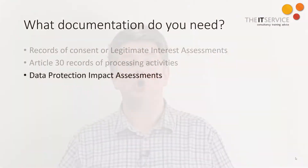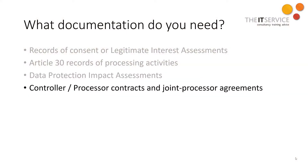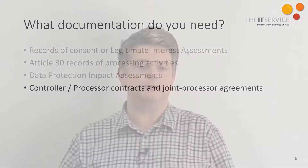What else do you have to do? We've talked about you being a controller, where you make decisions about the data, or a processor, where you're doing the processing on behalf of someone else. If you're the controller and you decide to use a processor to help with the processing, you have to have a written contract in place with each processor that you use. There are specific requirements as to what should go into that contract, listed in Article 28 of the GDPR, which goes through the obligations of processors. You'll also want to talk to your legal advisors to make sure you're covered.